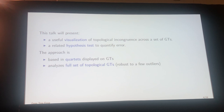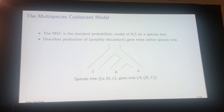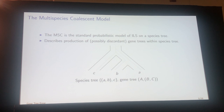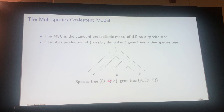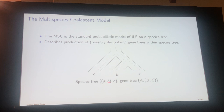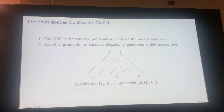A quick comment on the multispecies coalescent model: this is the standard probabilistic model of ILS on a species tree. It describes the production of gene trees within the species tree. In my notation, I use lowercase for species and uppercase for sampled genes within species. So here, species a and b are sister taxa, but the gene tree formed within those has b and c as sister gene lineages. This is a formal model we can write down, make predictions from, and use for inference.